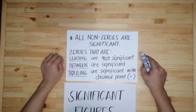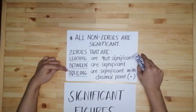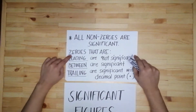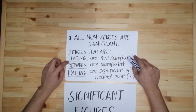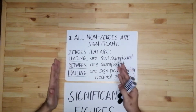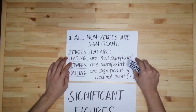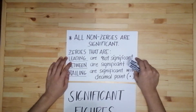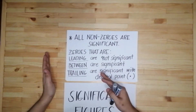Then we also have the following rules about zeros. Zeros that are first — leading — when we say leading, yung mga nasa unahan, they are considered not significant.